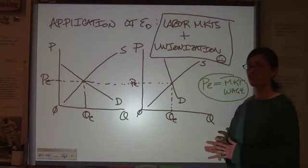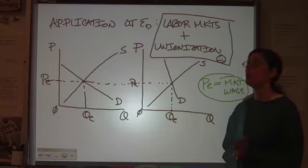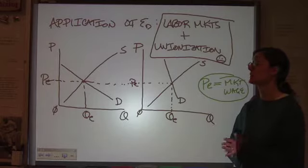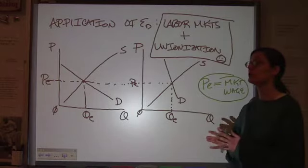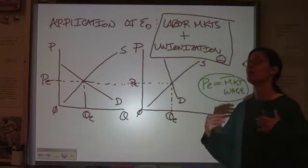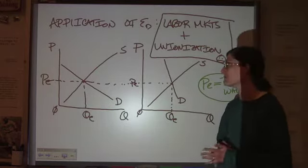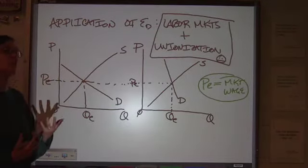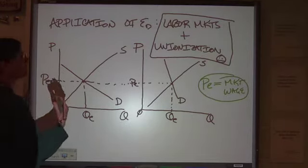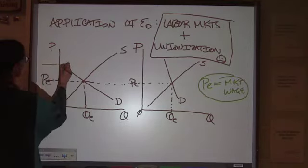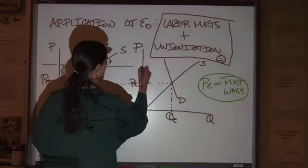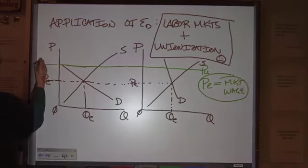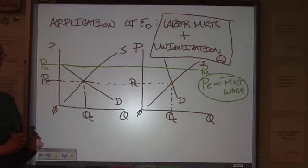Now, the first thing that tends to happen when an industry becomes unionized is that the labor union will try to jack up the wage to try to get better wages and more benefits for the workers. So let's say, for example, that with the impact of unionization, the price of labor, your market wage, goes up to this level right here. So that's the price with unionization, PU.